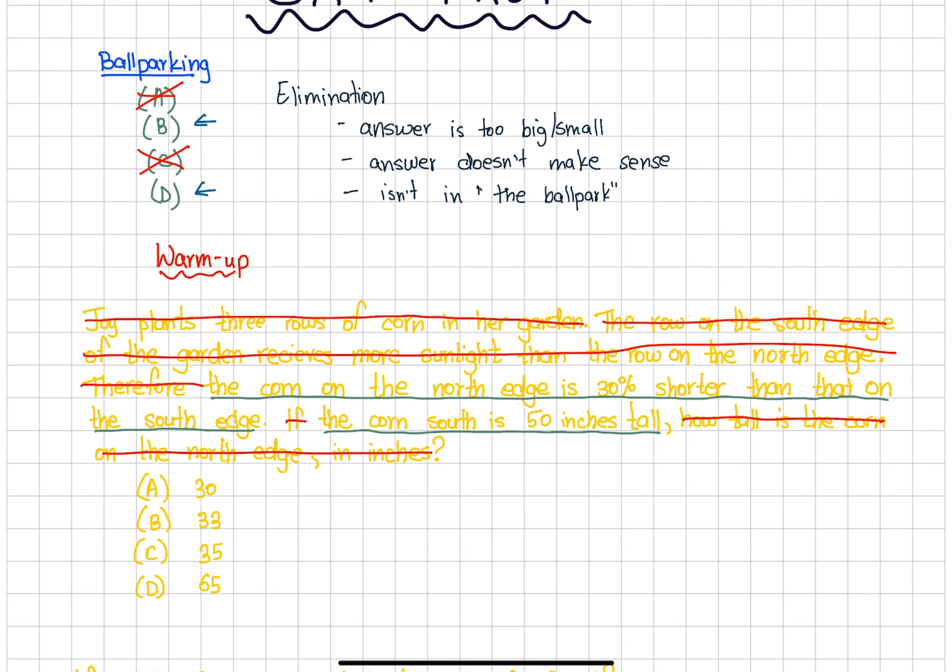Now the question looks way easier to solve. Using our ball parking strategy, let's see which answers don't make sense. 65 really doesn't make sense because it goes in the wrong direction - the corn on the north edge is shorter than the one on the south, not taller. So 65 doesn't make sense because it's too big.